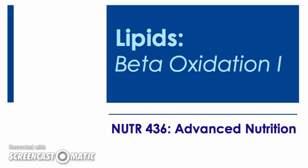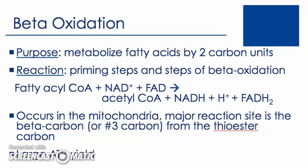The purpose of beta-oxidation is to metabolize fatty acids by two carbon units. Therefore, during one cycle of beta-oxidation, a 16-carbon fatty acid chain will be shortened by two carbons to a 14-carbon fatty acid chain. The two-carbon compound cleaved is acetyl-CoA. After the acetyl-CoA is cleaved from the process of beta-oxidation, it is able to undergo further metabolism through the Krebs cycle.